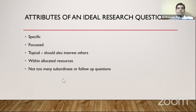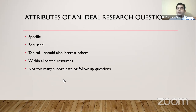The attributes of an ideal research question: it has to be specific, focused, and of interest to others. It should be topical — not addressing a question that was resolved 50 to 60 years ago. It should be completable within the allocated resources. And it should not generate too many subordinate or follow-up questions. While every research question will naturally generate some further questions, if it throws up 10 to 20 questions it will confuse the whole issue. Ideally, there should be no more than three, maximum five, follow-up questions from the primary research question.